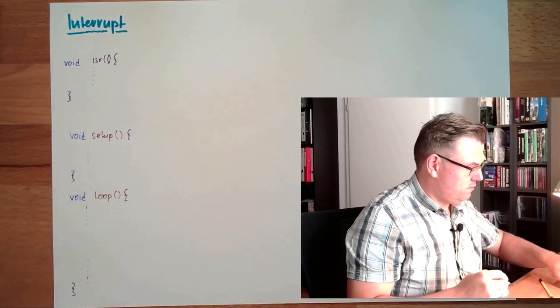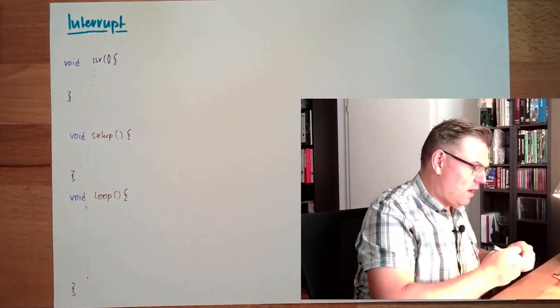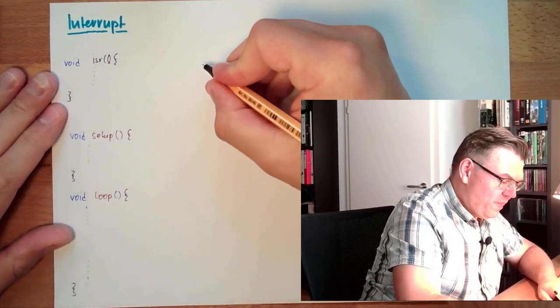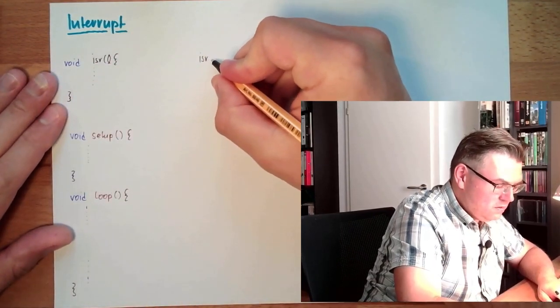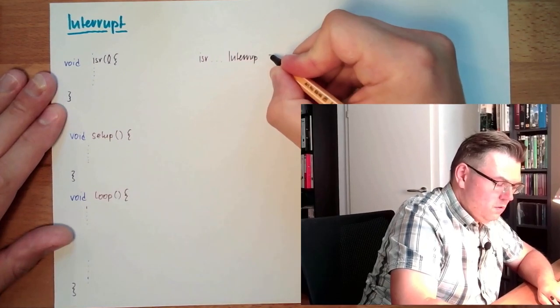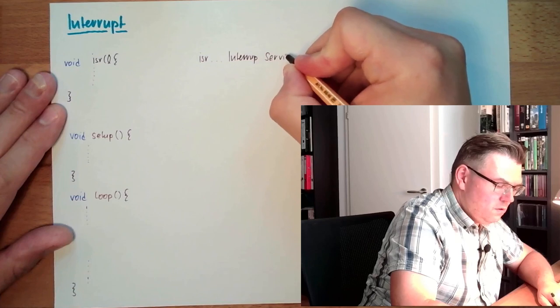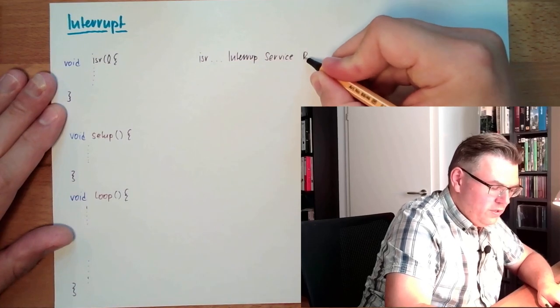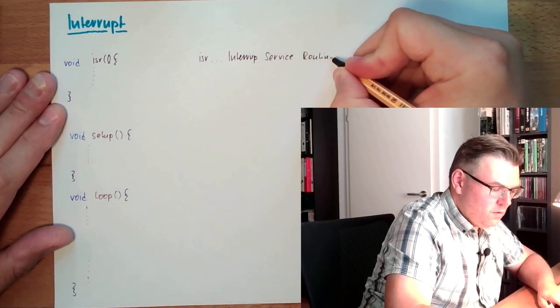The return value of this ISR is void, so there is no return. ISR means interrupt service routine.